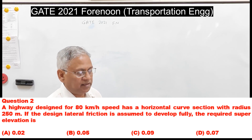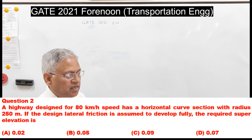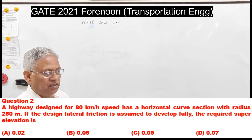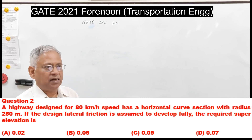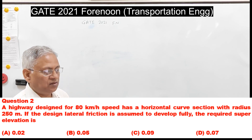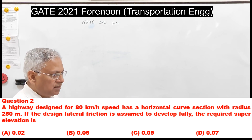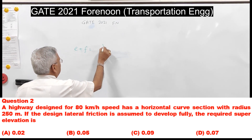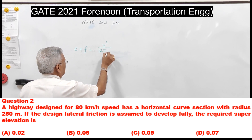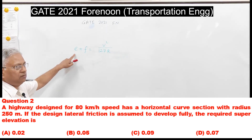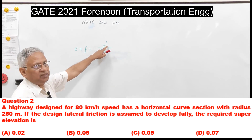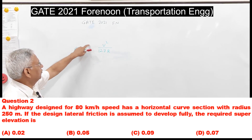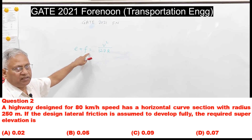The second question: a highway designed for 80 km/h speed has a horizontal curve section with radius 250 m. If the design lateral friction is assumed to develop fully, the required super elevation is — with options 0.02, 0.05, 0.09, or 0.07. The equation used to calculate super elevation on a horizontal curve is e + f = v²/127R, where e is super elevation, f is the coefficient of lateral friction, R is radius, and v is speed.